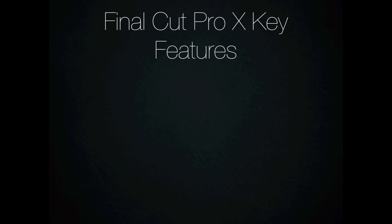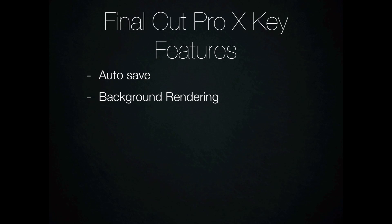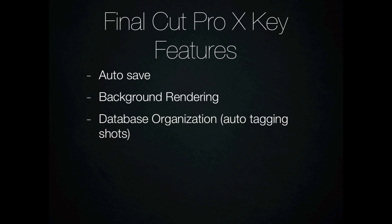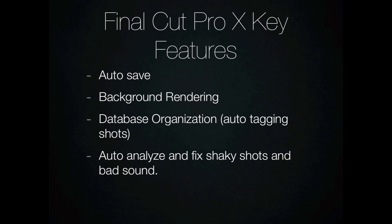Let's talk about the key features for each of these. One of the number one key features with Final Cut Pro 10 is autosave — it is automatically saving every single edit and cut that you make, so you don't actually have to save your project any longer. Next up is background rendering, whereas before in Final Cut Pro 6 and 7 you had to watch that render bar come up and were just stuck there. Now the rendering is in the background. There's also database organization, including auto shots, which basically does the organization for you, and the ability to auto analyze and fix shaky shots and bounce out.